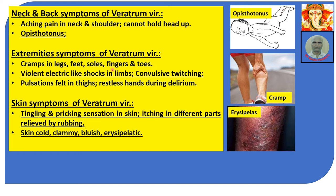Extremity symptoms of Veratrum Viride: cramps in legs, feet, soles, fingers, toes. Violent electric-like shock in limbs, convulsive twitching, pulsation felt in the thighs, restless hands during delirium. Pulsation in the right thigh is a very peculiar subjective symptom of Veratrum Viride, reported by the patient themselves. During delirium in high fever, the patient speaks and acts unconsciously — carphology-like picking — and the hands are restless.